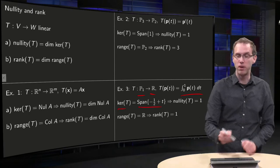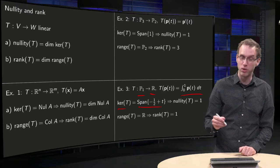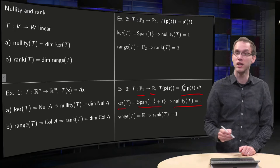The kernel of T was the span of minus one half plus t, so the span of one polynomial, so the dimension of the kernel equals one, so the nullity of T equals one.